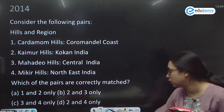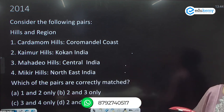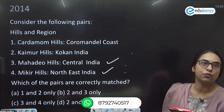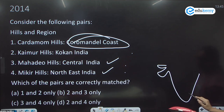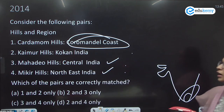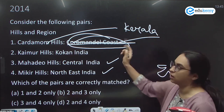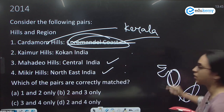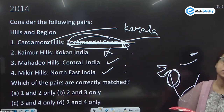A question on hills and coasts: Cardamom Hills near Coromandel Coast; Kaimur Hills in Konkan India; Mahadeo Hills in Central India; Mikir Hills in Northeastern India. Mikir in Northeastern India and Mahadeo in Central India are correct. However, Cardamom Hills are in Kerala, not near the Coromandel Coast. Kaimur is an extension of the Vindhyas, not associated with the Konkan coast. So statements 3 and 4 are correct; the answer is 3 and 4.